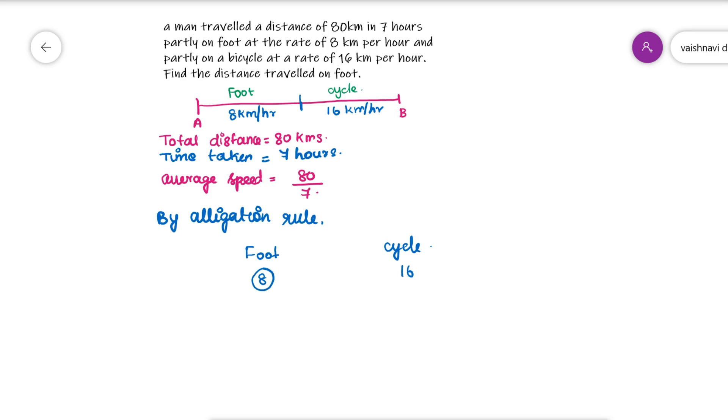8, 16, and the average is 80 by 7. Simplifying this rule: 16 minus 80 by 7 is minus 32 by 7, and 80 by 7 minus 8 is 24 by 7.